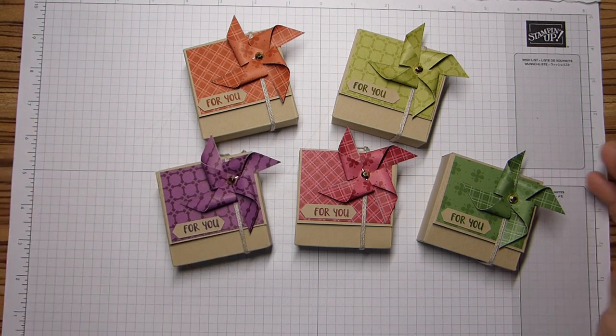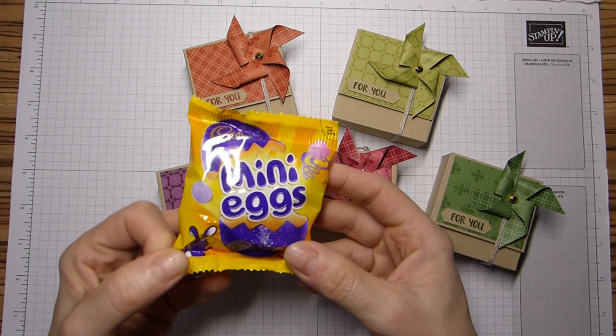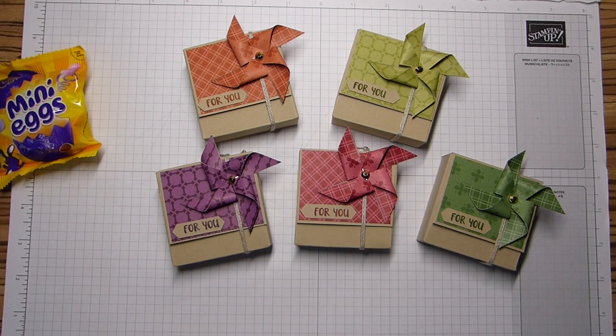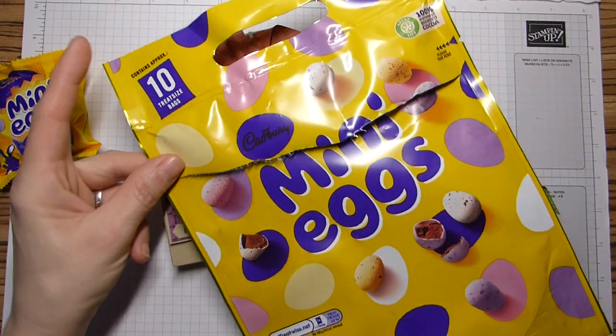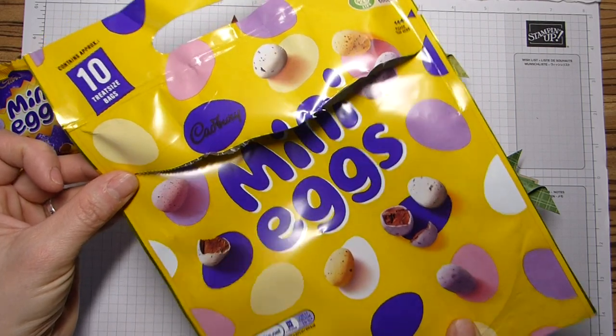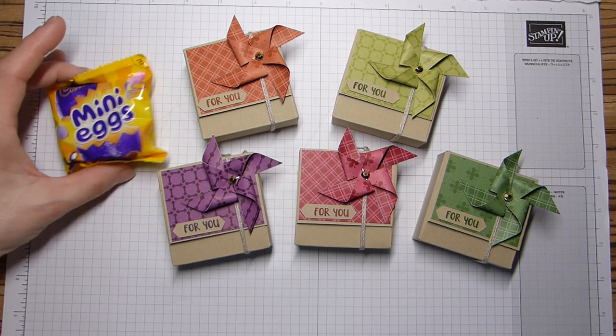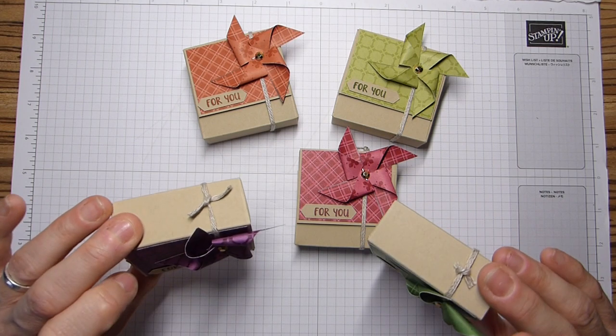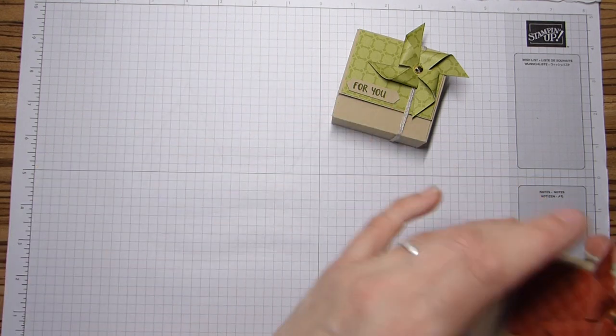They're really simple to make and each one holds a little mini bag of mini eggs. These are my favourites, they're so nice. I bought a big bag full from one of the local supermarkets. It holds 10 of the small bags. They just sit inside nicely and they just make a real fun gift. So I'm going to show you how to make them.